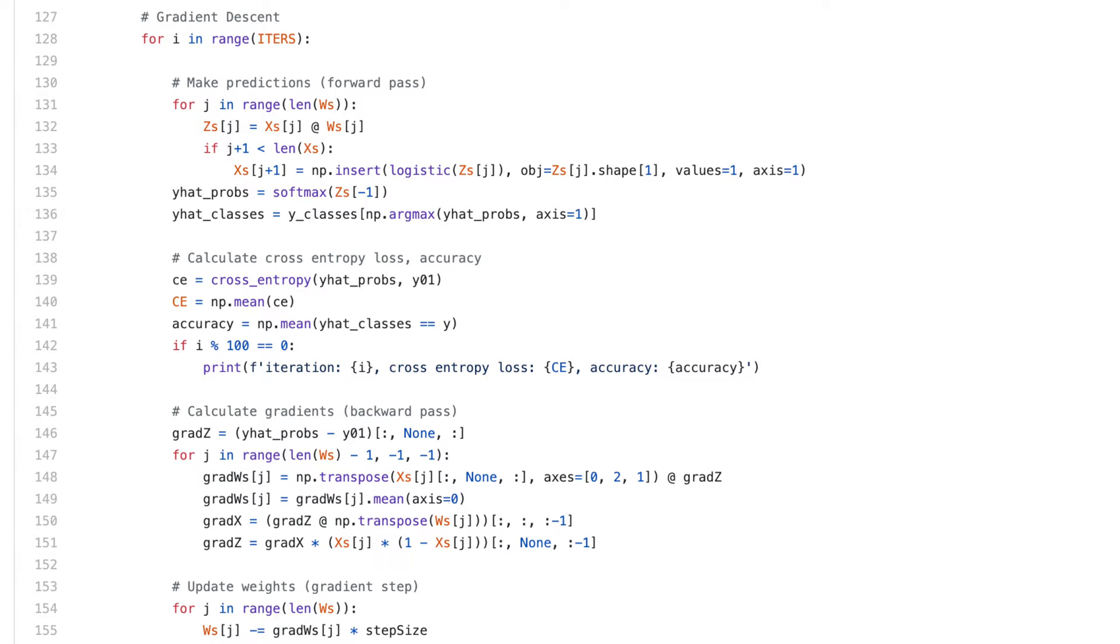Perhaps the hardest part to wrap your head around is the backward pass, i.e. backpropagation, which I've also implemented with a J indexer that iterates over the layers of the network, but backwards.